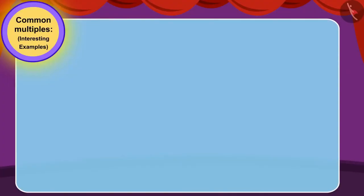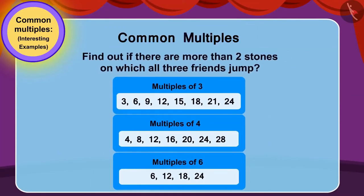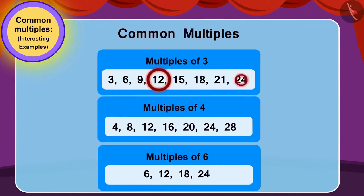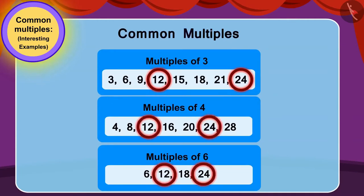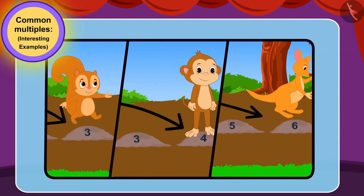Now, can you find common multiples of these three numbers and find out if there are more than two stones on which all three friends jump? You can find the answer by pausing the video. Yes! Twelve and twenty-four — 3, 4 and 6 have these common multiples. Because there were only two stones on which the three friends had jumped, the three friends crossed the marsh successfully and reached the way out.